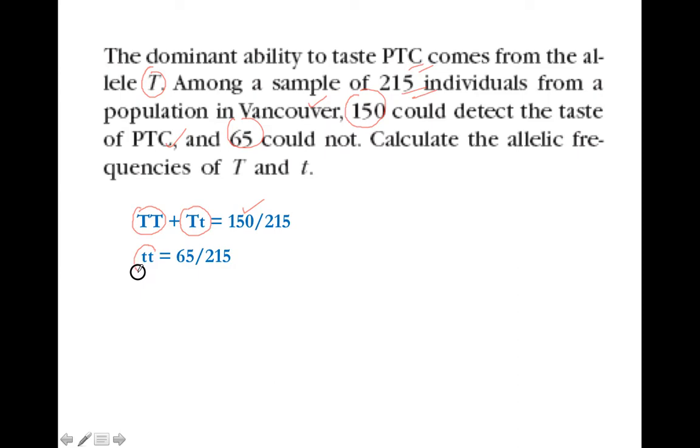As it is already mentioned that it is covered by a dominant allele called capital T, the population which can taste will be comprised of both homozygous as well as heterozygous, and we have 150 out of 215 of these. Those individuals who cannot taste this would be homozygous recessive, and there will be 65 out of 215 population. This is q squared, so q squared is 65 by 215. To find out q, we can under root this. If we under root this, what we will get is the value of q, which is 0.54.